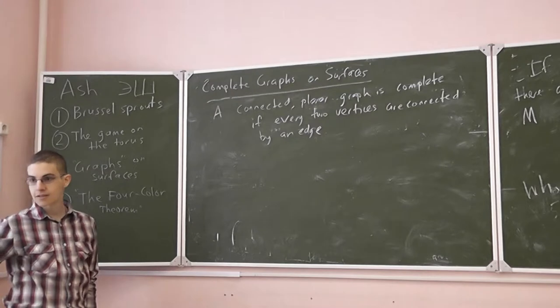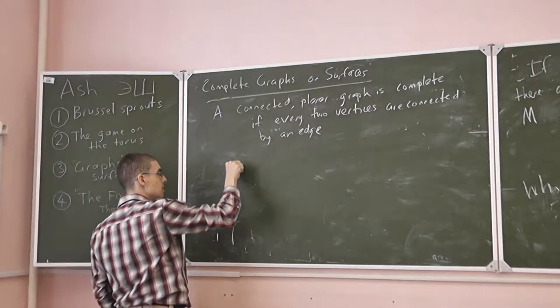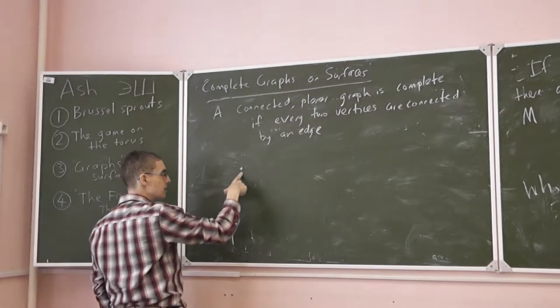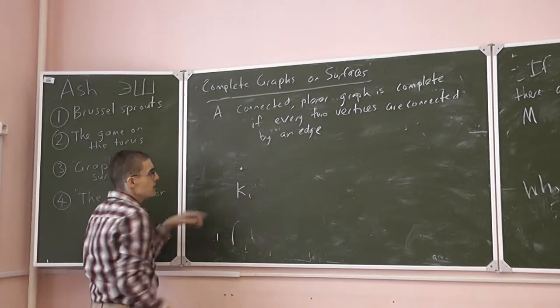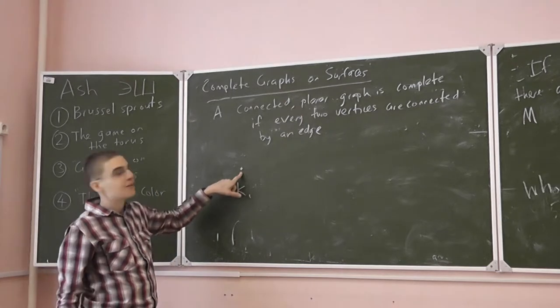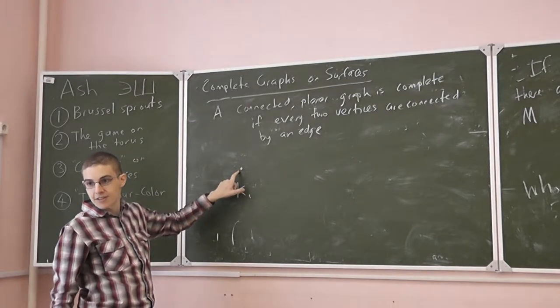If it had one vertex, one vertex, then the connected graph of one vertex is known by K1. This graph is complete. It's connected. It's planar. Every vertex is connected to every other vertex.